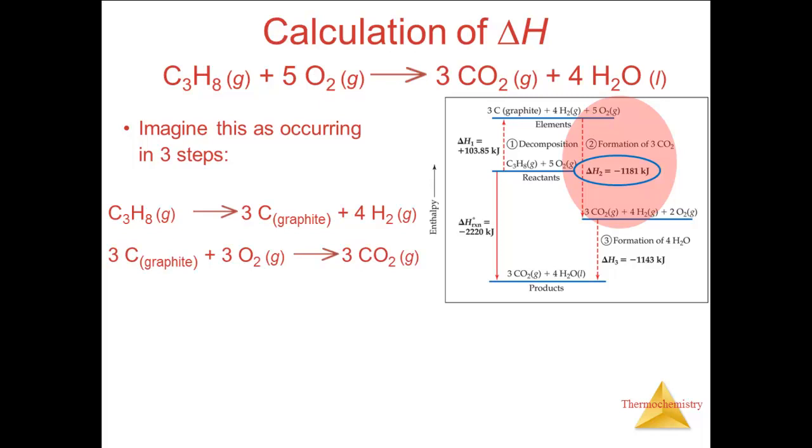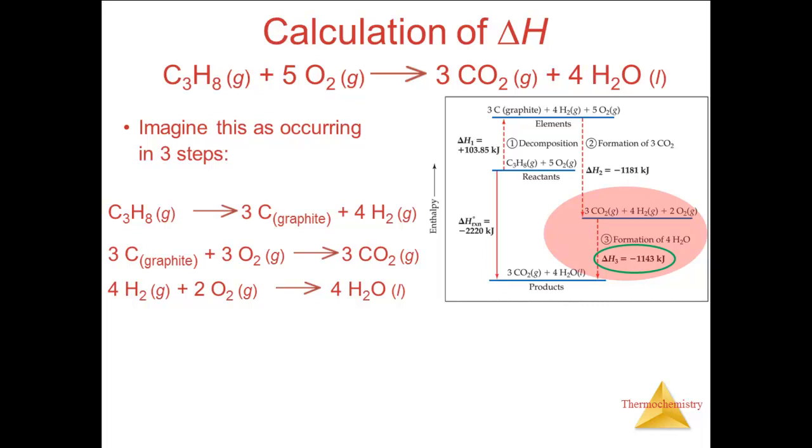The second step is the formation of three moles of CO2 from the carbon and some of the oxygen. This releases three times 393.5 kilojoules of energy, and delta H equals minus 1,181 kilojoules. Step three is the formation of four moles of H2O liquid from the hydrogen and the rest of the oxygen. This releases four times 285.8 kilojoules of energy, and delta H equals minus 1,143 kilojoules.